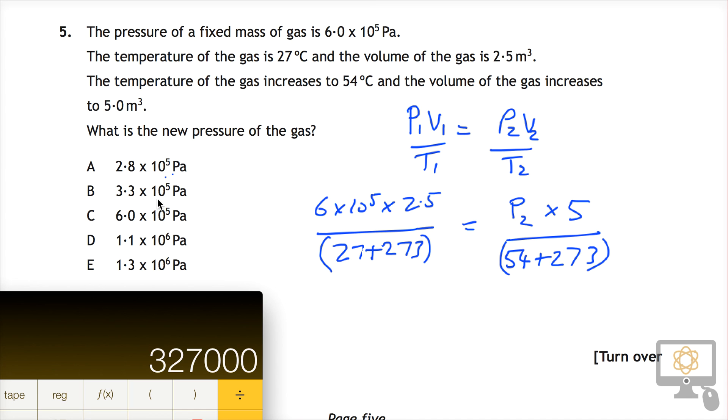And it's 327,000, or 3.27×10⁵, which is 3.3×10⁵. So it looks like our answer is this one here, which is B, 3.3×10⁵, so a relatively straightforward question to do.